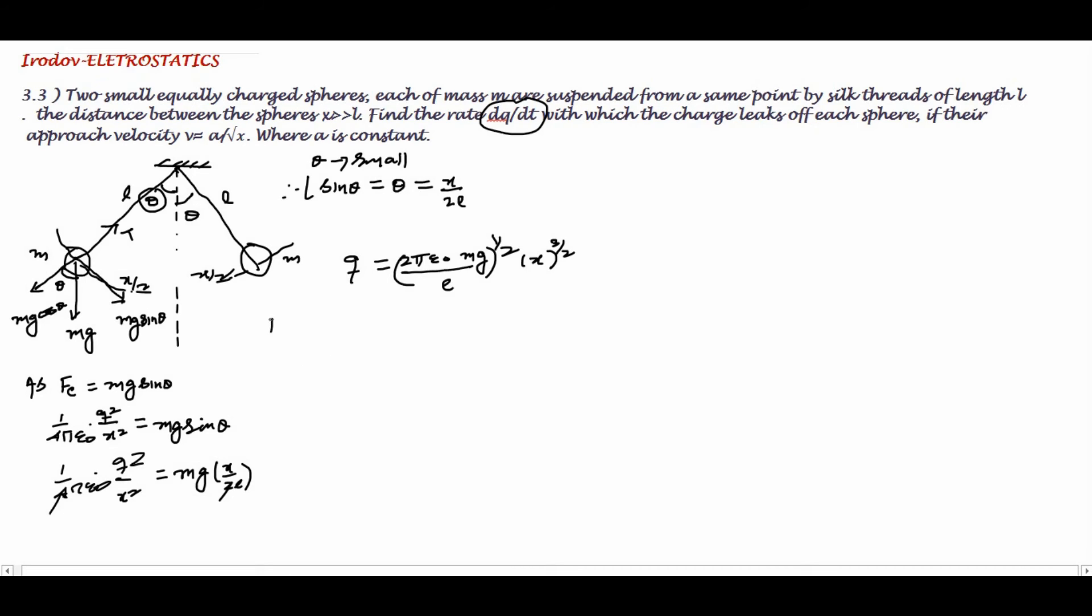In order to find dq/dt, the rate of charge flow, I can write: this whole is constant, so you can take it out: √(2π ε₀ mg/L). Now differentiate it.